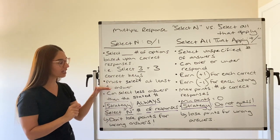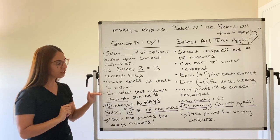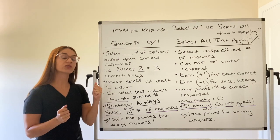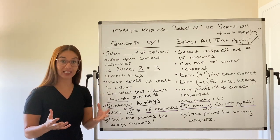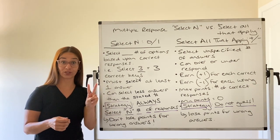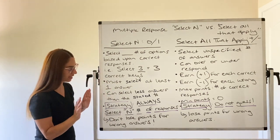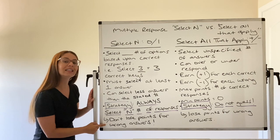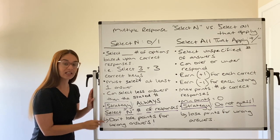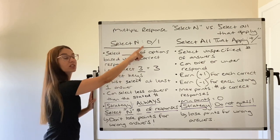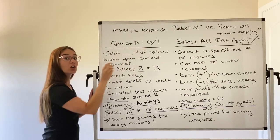You must select at least one answer and you can select less than the amount provided to you. So if it says select the best three answers, you can actually just select two. Now I need you to understand this.